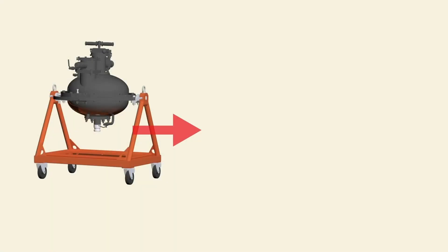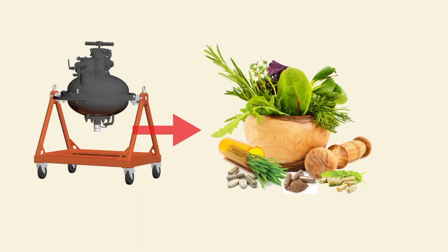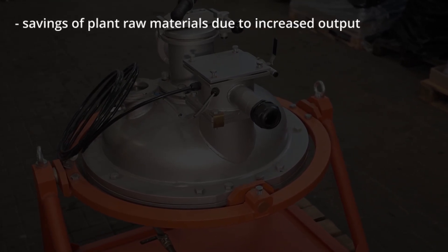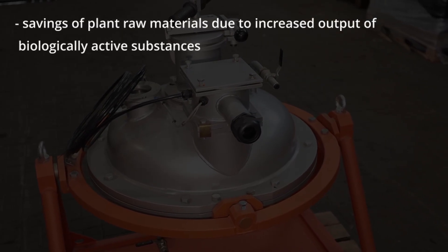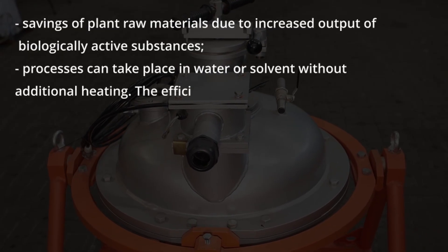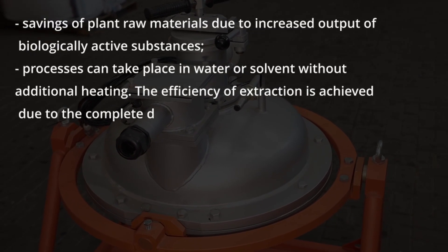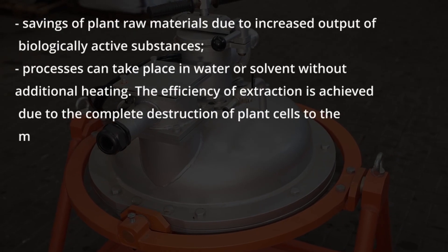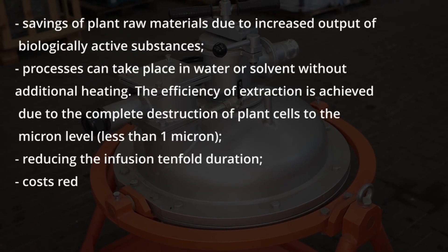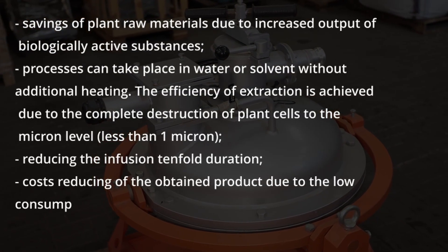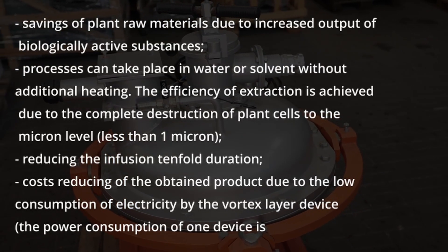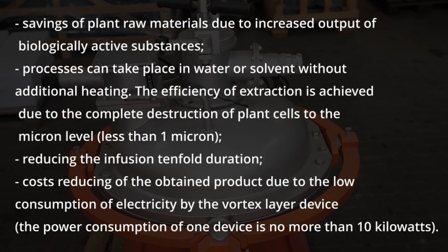The use of Vortex Layer Devices for extraction from medicinal plants has the following advantages: savings of plant raw materials due to increased output of biologically active substances; processes can take place in water or solvent without additional heating; extraction efficiency is achieved through complete destruction of plant cells to the micron level, less than 1 micron; and a 10-fold reduction in infusion duration. Costs are also reduced due to low electricity consumption — the power consumption of one device is no more than 10 kW.